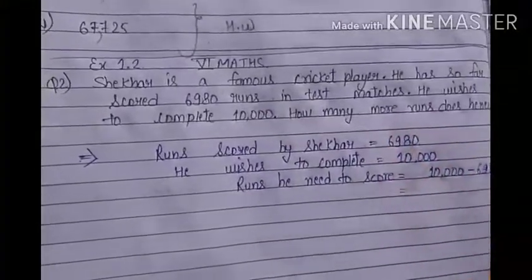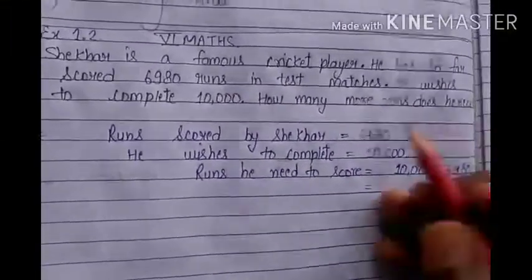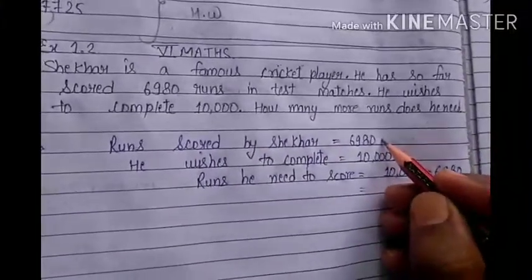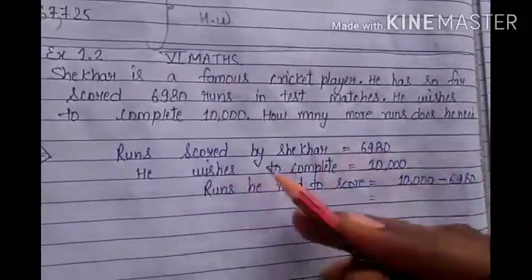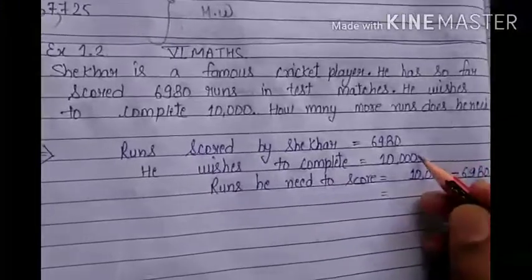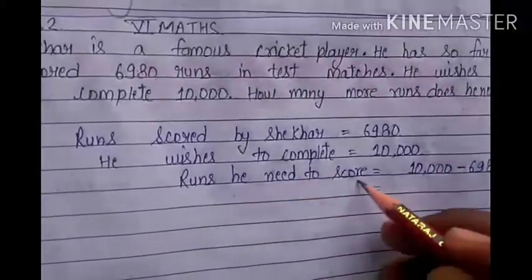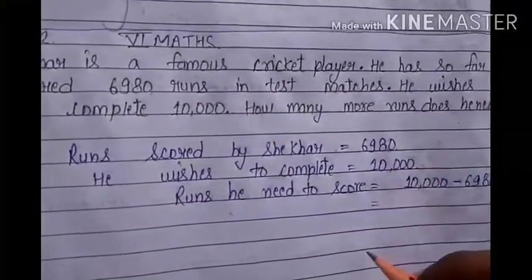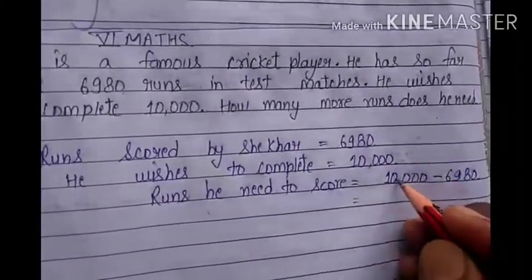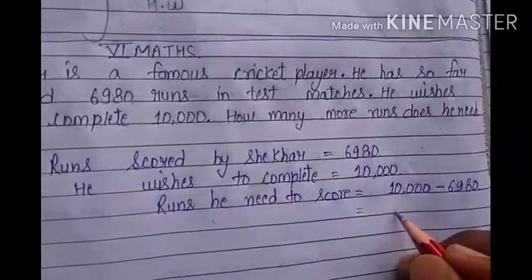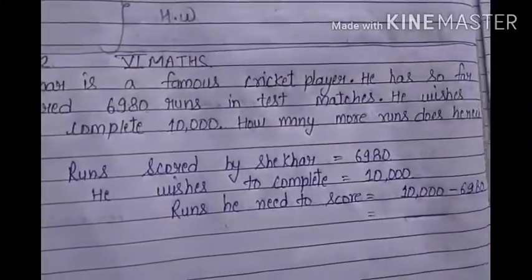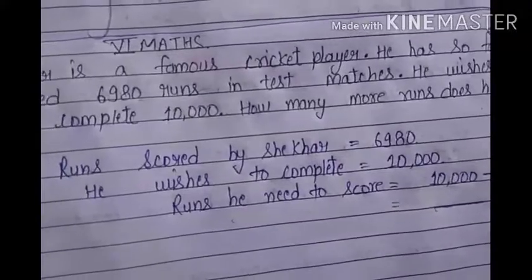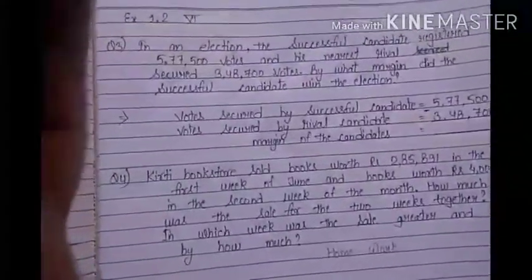So what do we need to do? 10,000 minus 6,980. He has scored 6,980 runs in test matches and wishes to complete 10,000 runs. So we will subtract: 10,000 minus 6,980. This is for your homework — you have to solve it and find the difference.